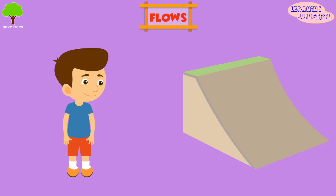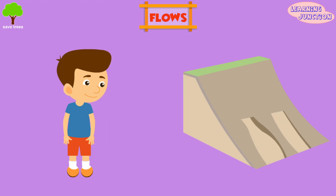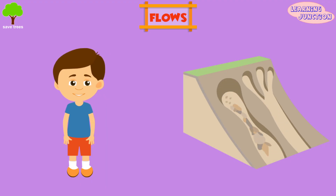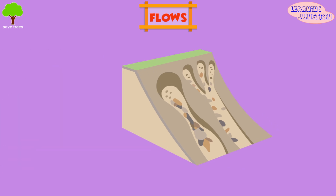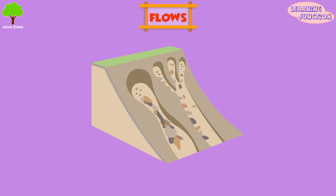Flows: this is the most dangerous form of landslide. Flows have a high water content which loosens the slope material and changes it into a slurry. For example, mud flows in the UK.